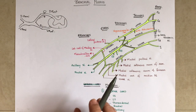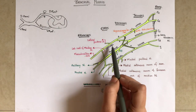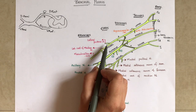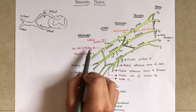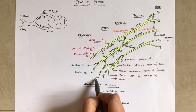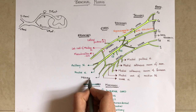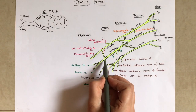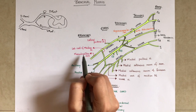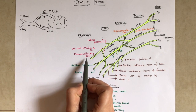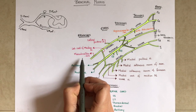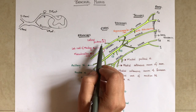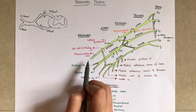From the lateral cord there are only three branches: the lateral pectoral nerve, the lateral root of median nerve, and the musculocutaneous nerve. The lateral root and the medial root together form the median nerve. The musculocutaneous nerve is the major nerve of the anterior compartment of the arm and it pierces the coracobrachialis muscle.